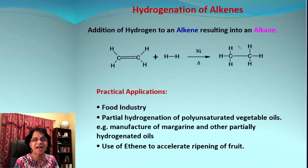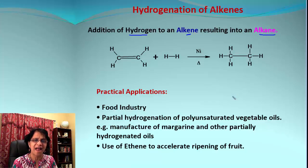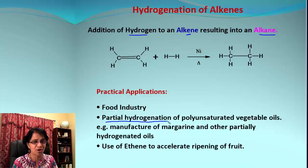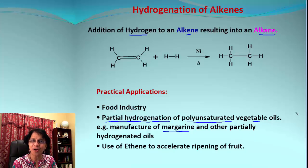Let's find out how we apply these reactions in real life. The first one is hydrogenation — adding hydrogen to an alkene with the end result as an alkane, which is all single bonds. It is mainly used in food industries. Have you heard about partially hydrogenated oils? That is the hydrogenation process. The partial hydrogenation of polyunsaturated vegetable oils produces compounds like margarine and other partially hydrogenated oils.